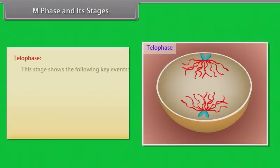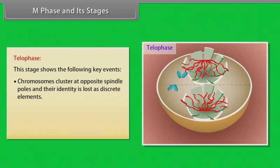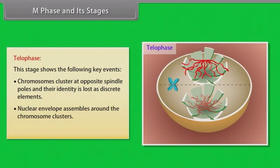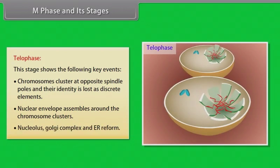The next stage is telophase. It shows the following key events: chromosomes cluster at opposite spindle poles and their identity is lost as discrete elements; nuclear envelope assembles around the chromosome clusters; nucleolus, Golgi complex, and ER reform.